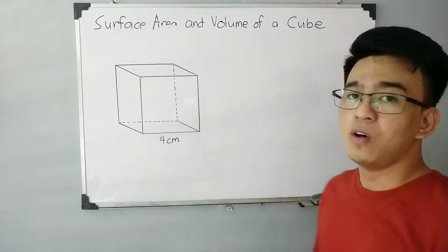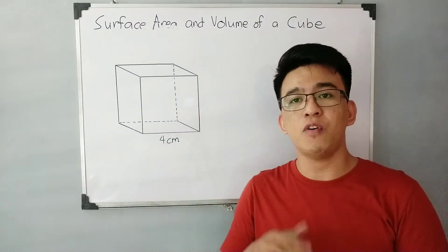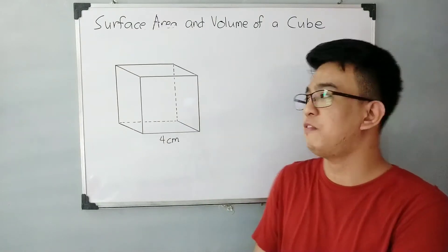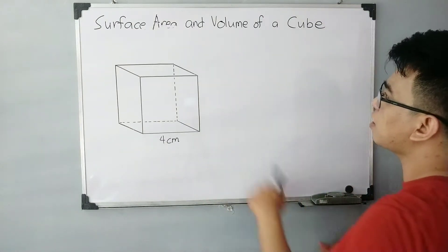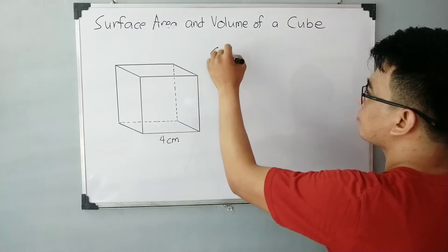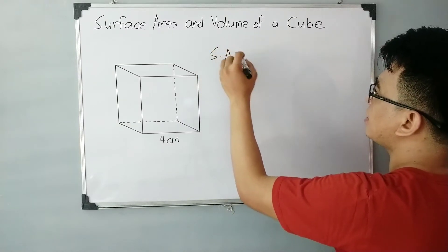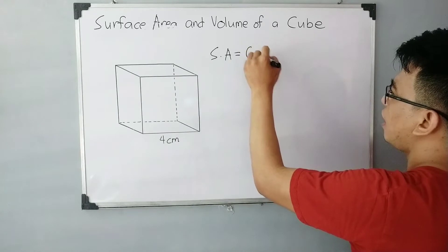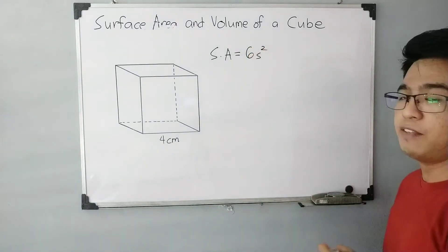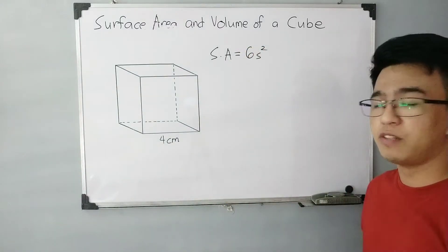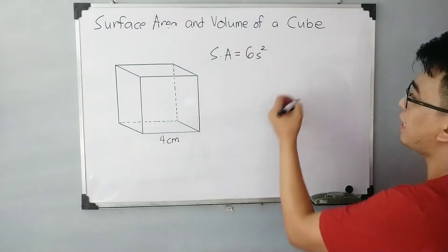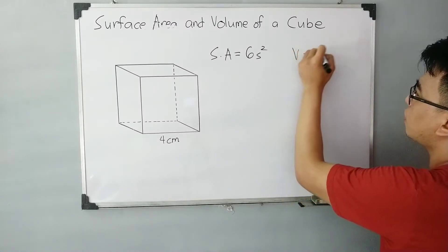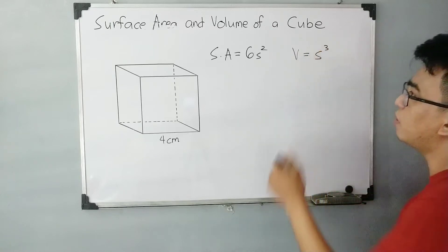So the question is, what is the formula in calculating for the surface area and volume of a cube? For the surface area, our formula is simply 6 times S squared. And for the volume, to calculate for the volume, the formula we use is simply V is equal to S cubed.